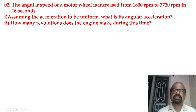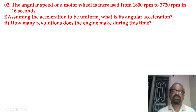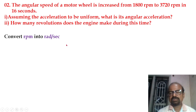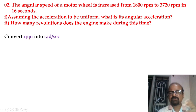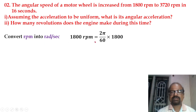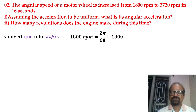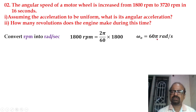Next problem: The angular speed of a motor wheel is increased from 1800 RPM in 16 seconds. Assuming the acceleration to be uniform, what is its angular acceleration and how many revolutions does the engine make during this time? We need to convert RPM to radian per second: multiply by 2π and divide by 60. The initial angular velocity is 60π, which equals 65 radian per second.